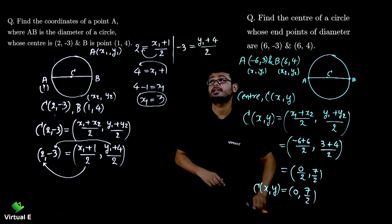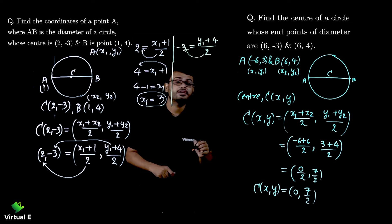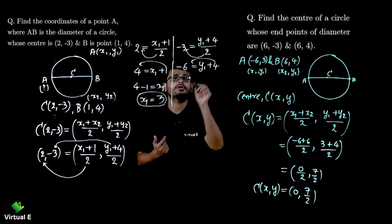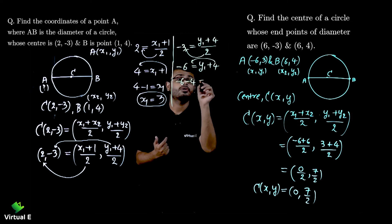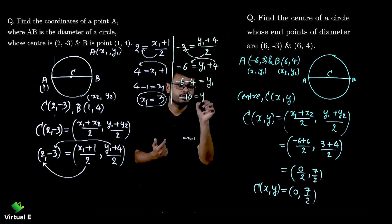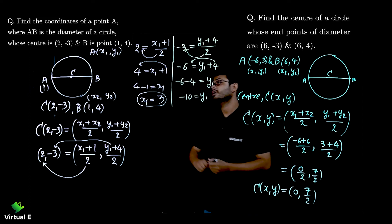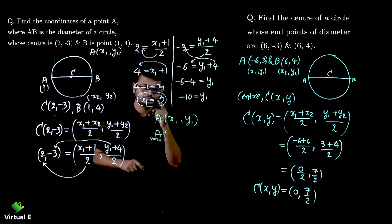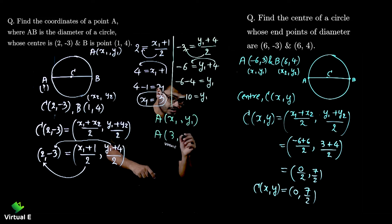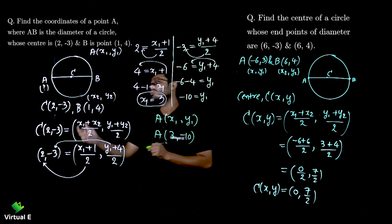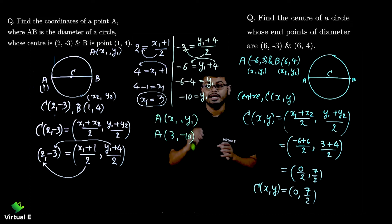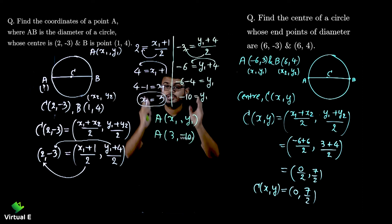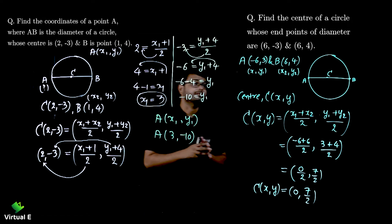For the y-coordinate: −3 × 2 = −6 = y1 + 4. Shifting 4 gives y1 = −6 − 4 = −10. So the coordinates of point A are (3, −10). Remember: this is the reverse question where the midpoint is given — equate x with x, y with y, solve the two linear equations, and get the coordinates.